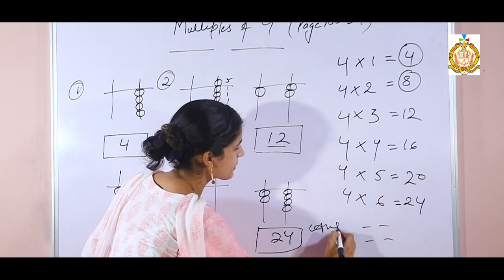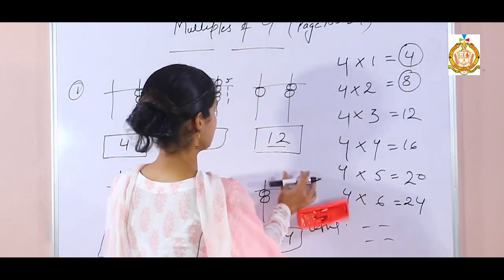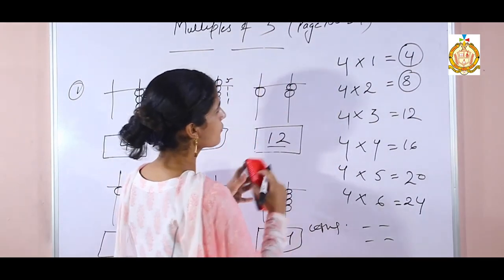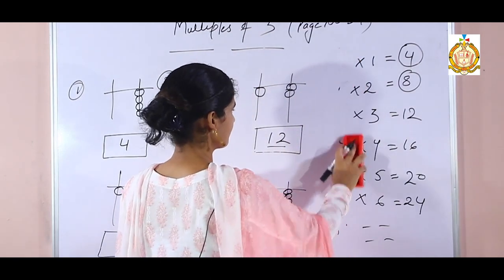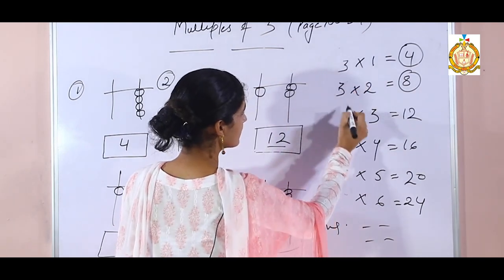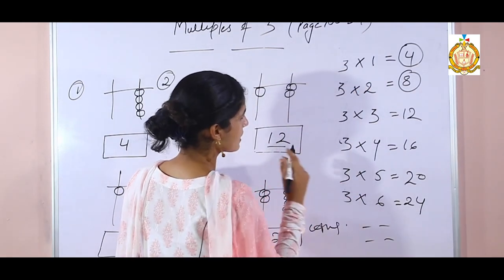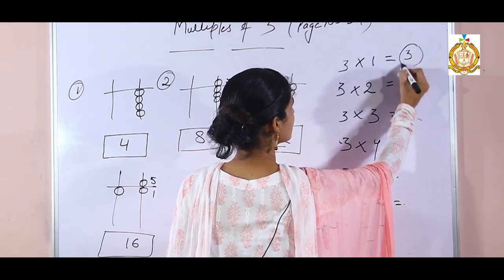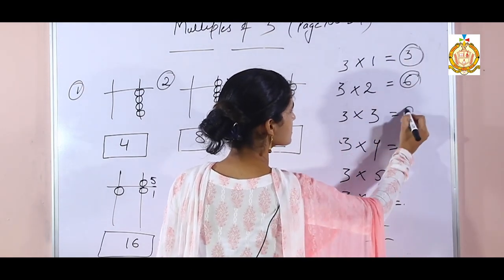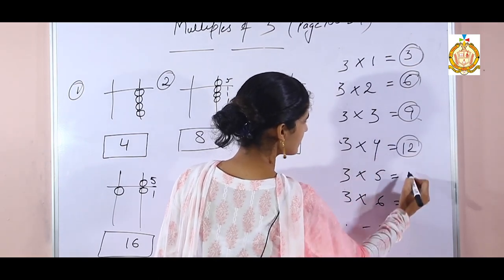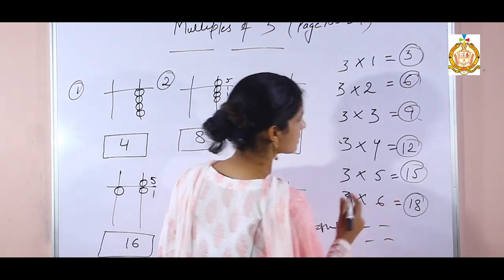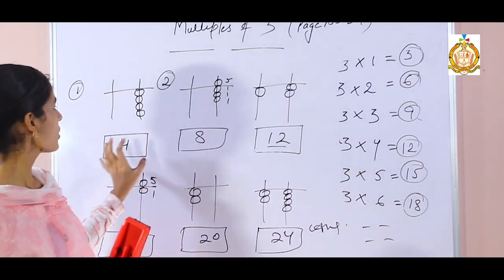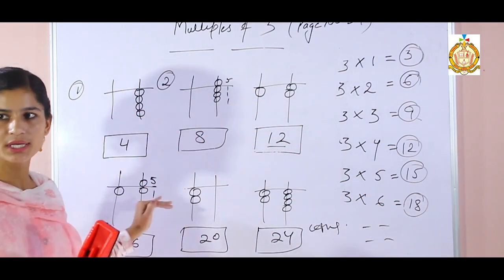This is the concept of multiples. If they say multiples of 3, then instead of 4 you write 3, and those numbers will change. 3×1 is 3, 3×2 is 6, 3×3 is 9, 3×4 is 12, 3×5 is 15, 3×6 is 18. The multiples of 3 are 3, 6, 9, 12, 15, 18. Write those numbers in the boxes and draw the beads.